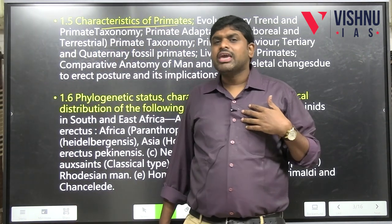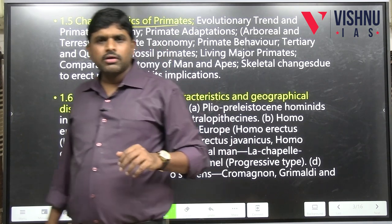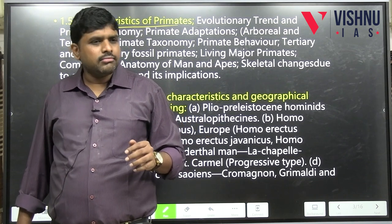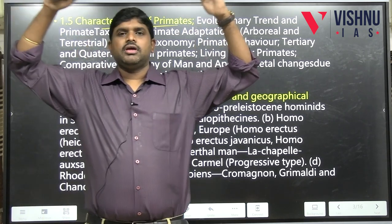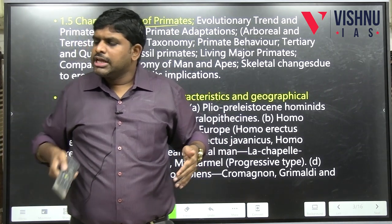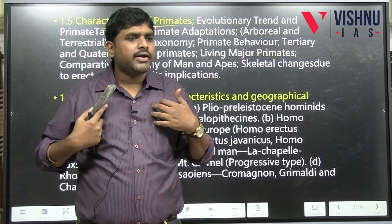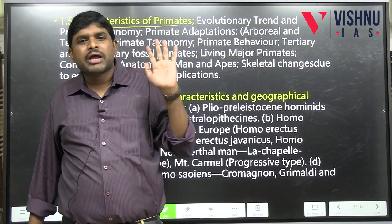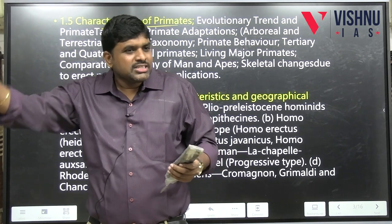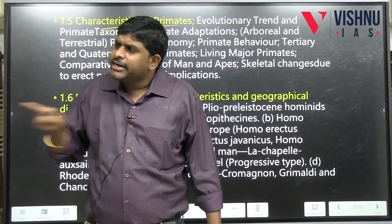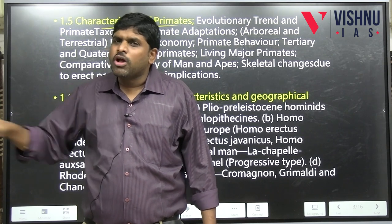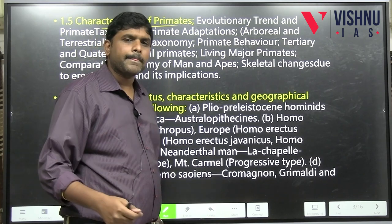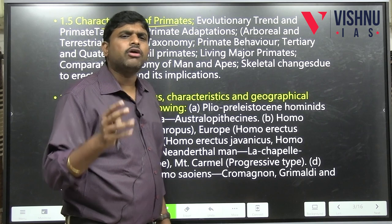We believe we came from monkeys, but that's not true. We did not come from chimpanzees, orangutans, or gorillas. There is something called primates, within which are greater apes, lesser apes, and hominoids — we are hominoids. Our ancestors are primates. In Unit 1.5, we study the relationship between man and primates — technically called primates, though generally we say apes.